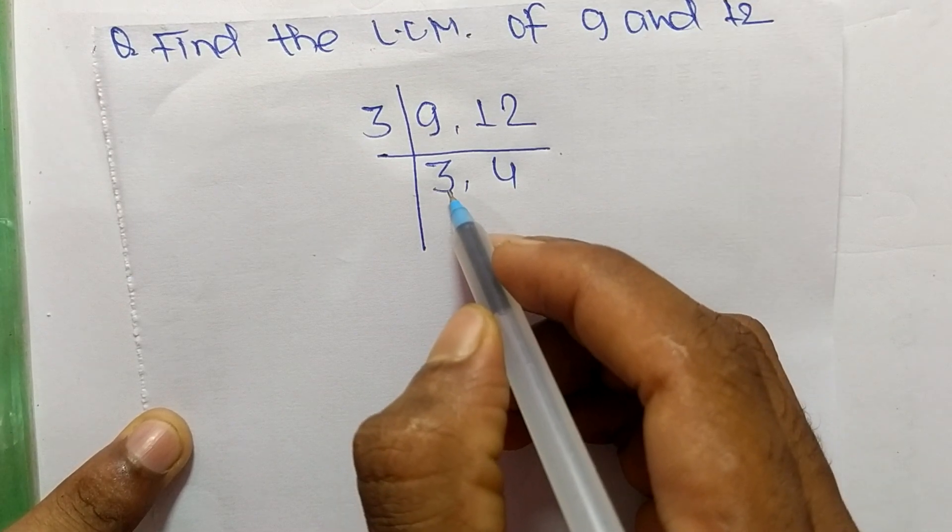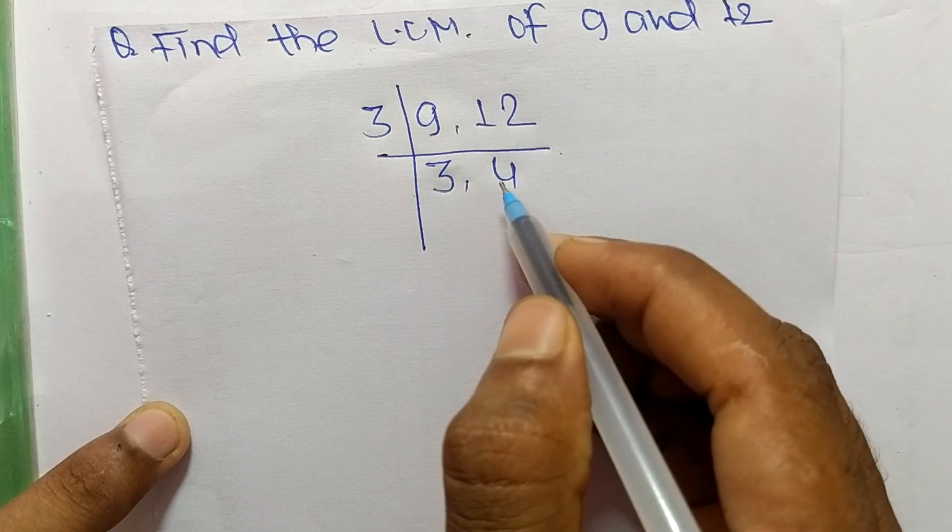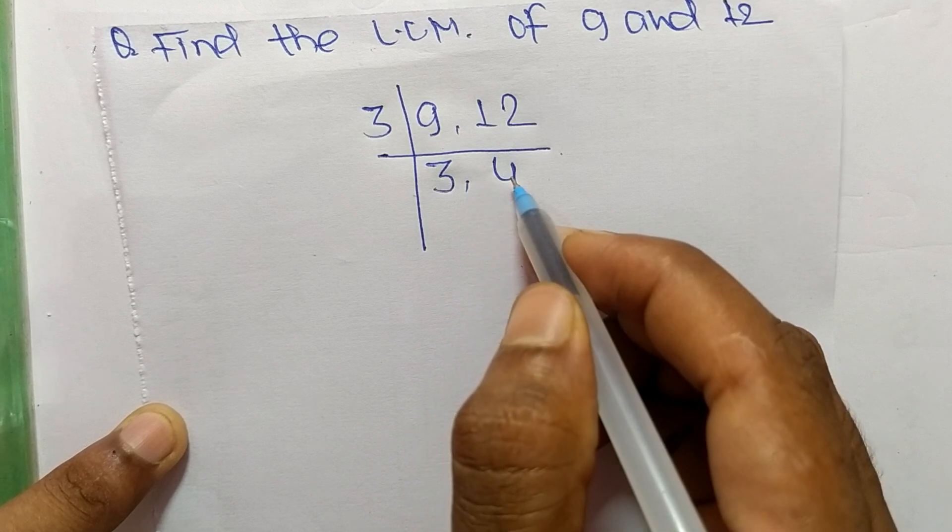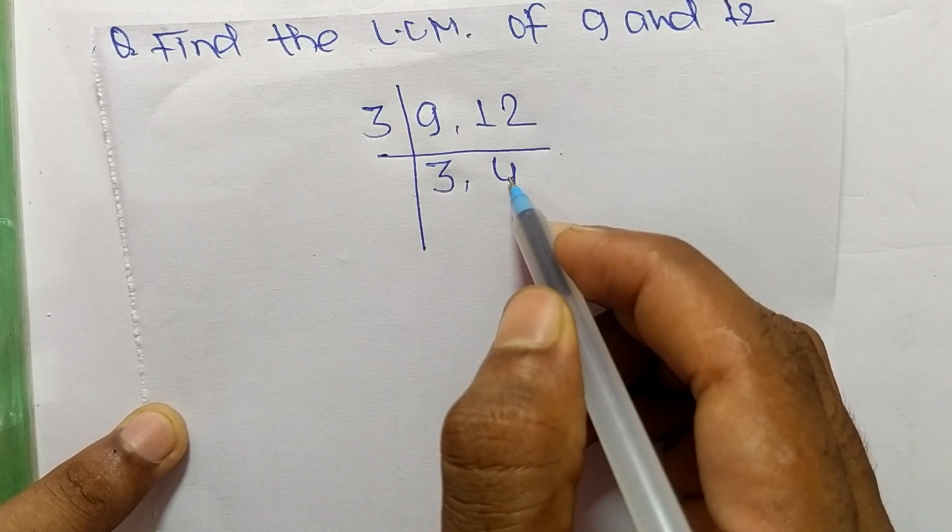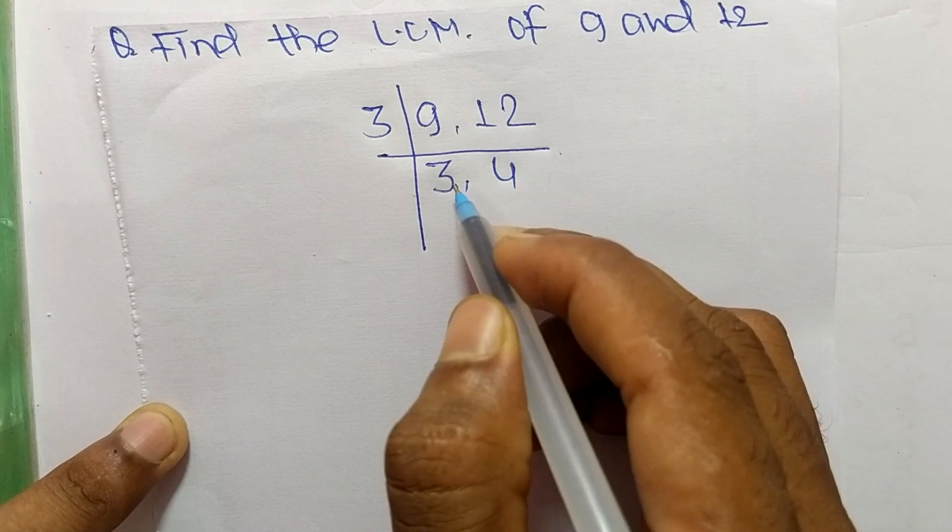Now we get 3 and 4, which are not divisible by the same number. If we take 3, it can divide 3 but can't divide 4. And if we take 2, it can divide 4 but can't divide 3.